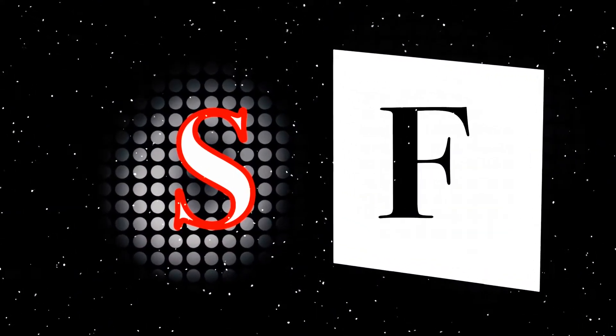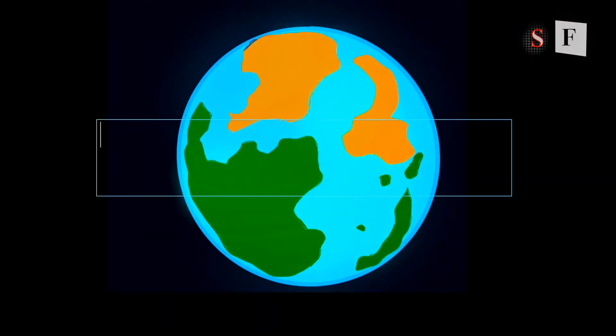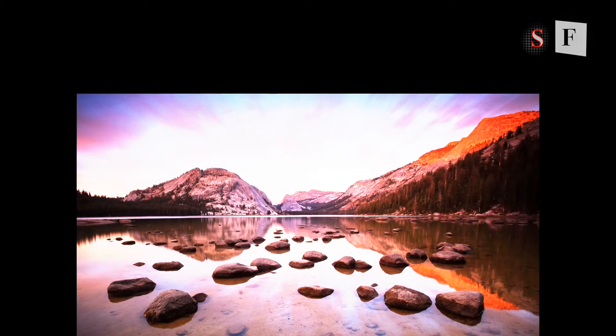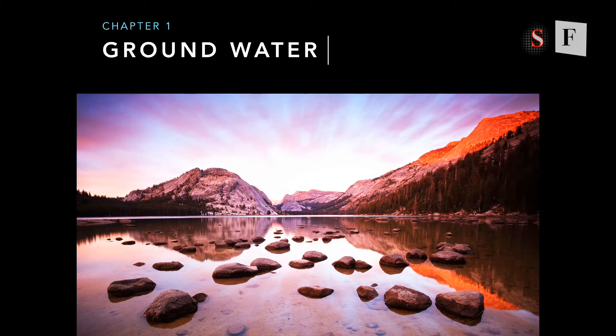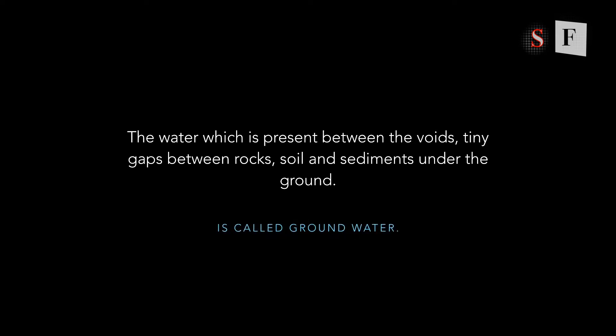There is a lot of water present inside the ground surface. Today's video we are going to talk about groundwater — where it occurs and what are its origins. Water is present in different forms on the surface of the earth. The water which is present inside the surface of the earth, between the tiny gaps inside rocky layers or soil sediments, is called groundwater.